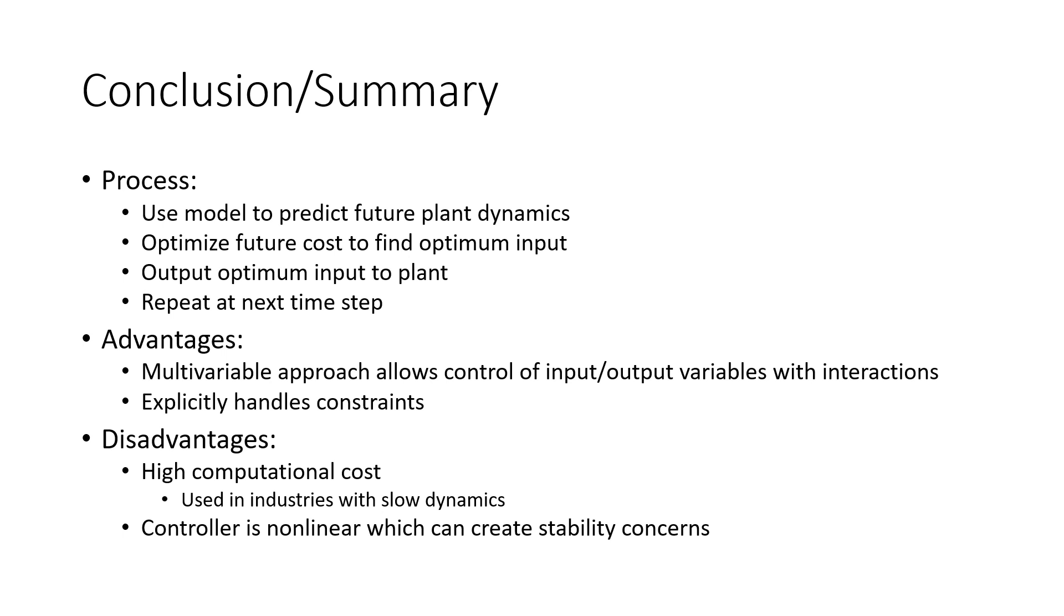In summary, the process of MPC control is to use a model to predict future plant dynamics, solve an optimization problem to determine the optimum inputs, and then feed this optimum input into the plant. Then this process is repeated at the next time step. Some of the advantages of MPC control are that because it is a multivariable approach, it can solve control problems where the inputs or outputs interact with one another. It can also explicitly handle constraints placed on the inputs and state variables. One major disadvantage is that it takes a lot of computational power because the optimization problem must be solved at every time step. For this reason, it has mainly been used in industries with slow dynamics, such as the petrochemical industry. Because the controller is non-linear, there are also states that could cause the controller to become unstable. For this reason, it is often necessary to place constraints on the controller.